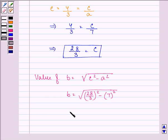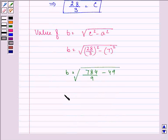So we have the value of a as 7, 84 by 9 minus 49, all in square root. That is after taking the LCM, 343 by 9, that is further equal to... So b square is further equal to, squaring both sides, 343 by 9.